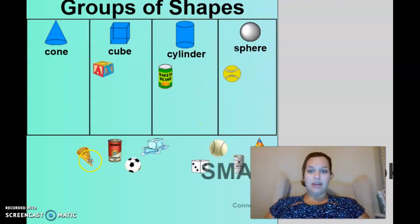Okay, here we go. Yeah. That's a what? A cone. Very good. It's got the pointy top and the circle on the bottom.